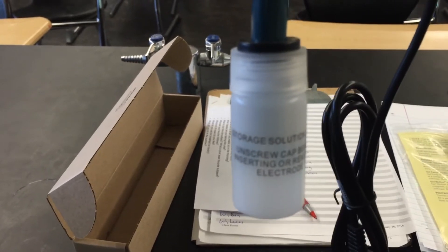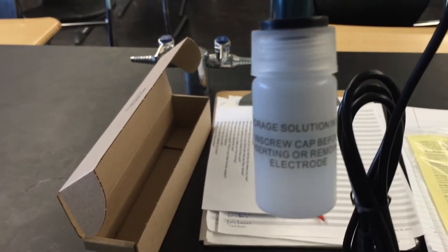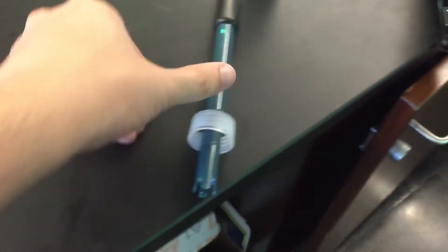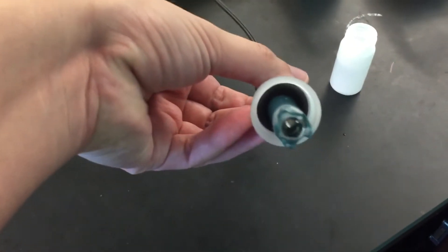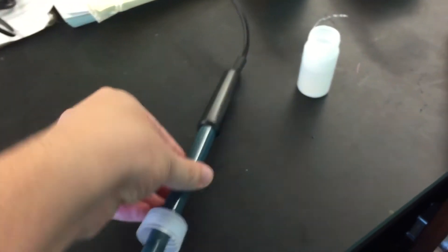Like it says, storage solution, unscrew cap before inserting or removing the electrode. And so when you remove it, it ends up looking something like this. You can actually see the glass electrode bulb here at the bottom.